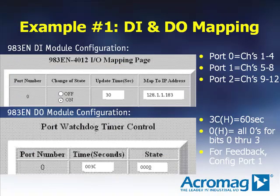From the top screen capture, you can see that we'll turn on change of state updates for port 0. We'll also program the timed updates for every 30 seconds, which will basically act as a heartbeat for the system. We'll map the four-channel port over to IP address 128.1.1.183. The bottom screen capture shows how we're configuring the watchdog timer and output states on the discrete output module. The watchdog timer is set to 3C hex, which corresponds to 60 seconds decimal. The output state is set to 0, which means all four output channels for port 0 will be de-energized if communications does not occur within 60 seconds. If the user was interested in looping back the status of the discrete output, they would simply wire the output to a channel on port 1 and set up I2O communications similarly going back to the input module.